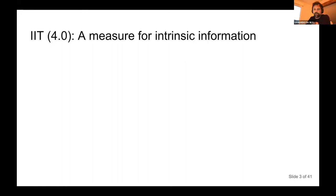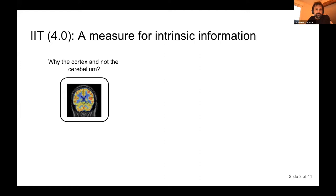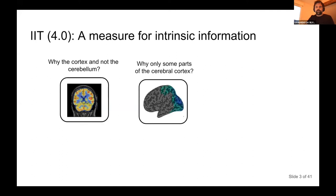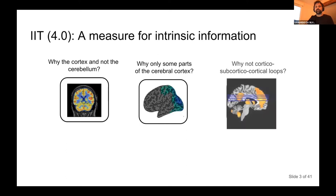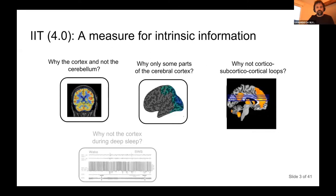What should a scientific theory of consciousness address? I think it should explain why the cortex and not the cerebellum seems to be the host of conscious experience. If someone without a cerebellum is talking to you, they appear as conscious as anybody else — yet without the cortex that's apparently not true. Even more impressively, why do only some parts of the cortex seem relevant for conscious experience, and why not cortico-subcortical loops?